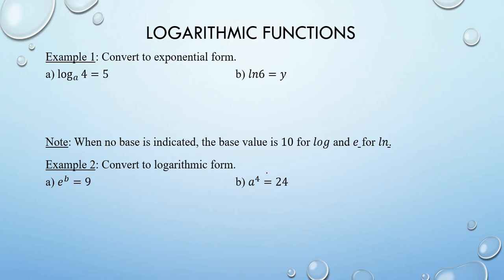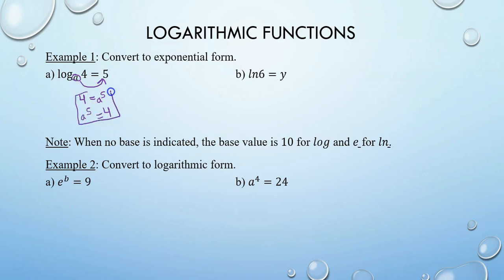Let's get some practice. Convert to exponential form. Remember, it's all about the base — circle the base a. a is hanging with 4 in log form, so a will be hanging with 5 in exponential form. That means you get 4 equals a to the 5th, or a to the 5th equals 4. Either format is correct.